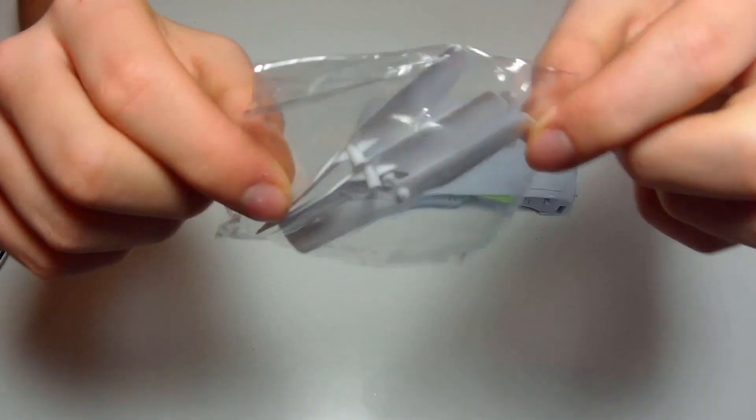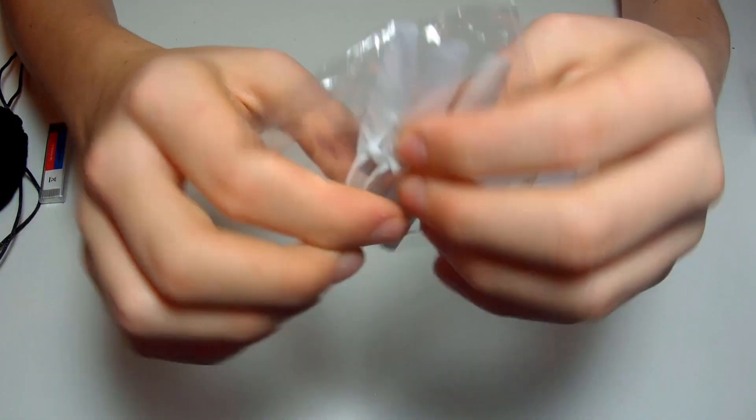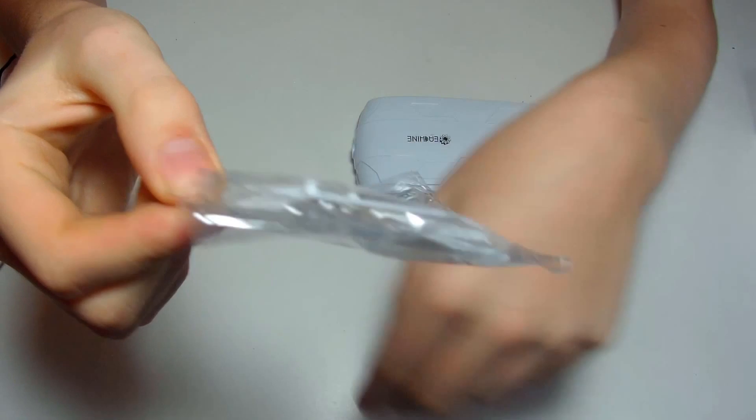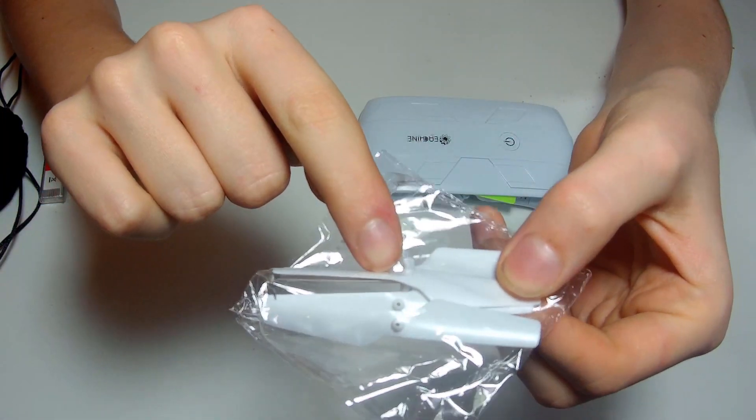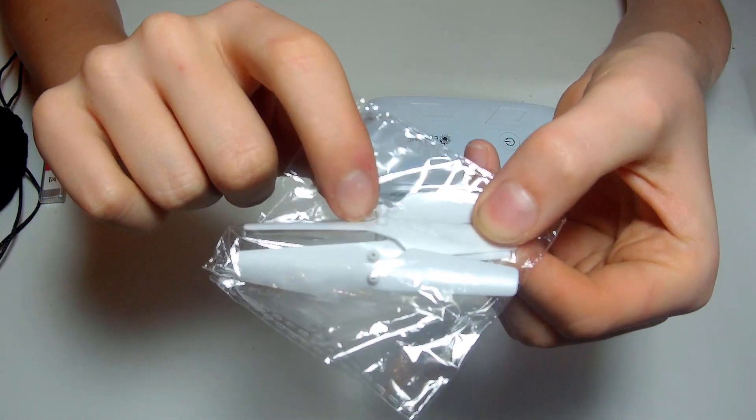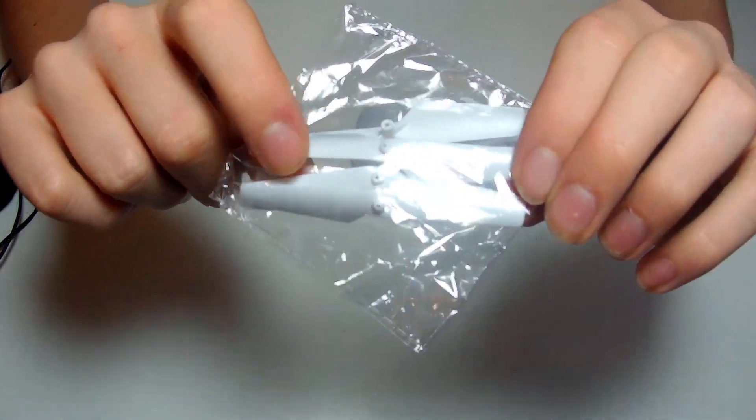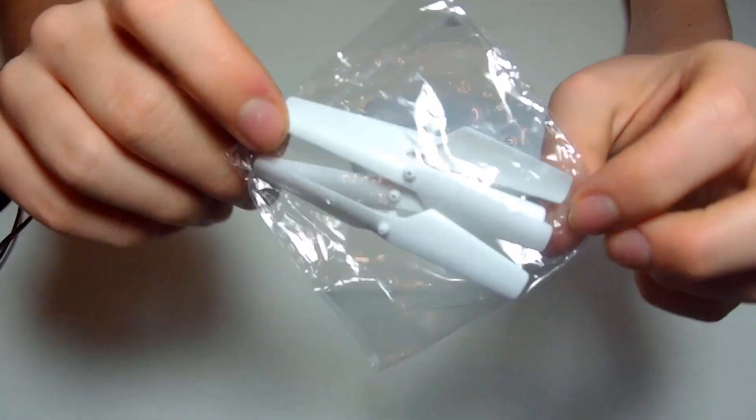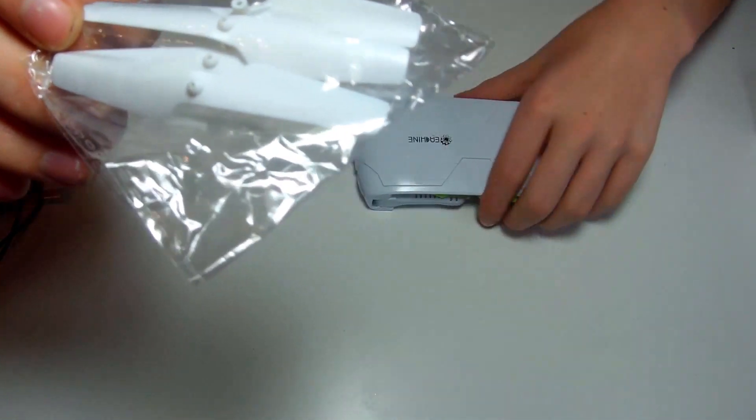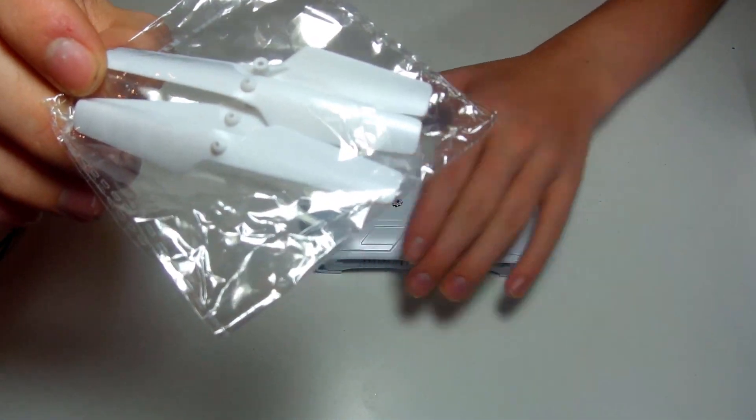You're also going to get the four props that are on the drone itself and then four spare white props. These props have no markings on them, so if you need to put them onto the quad it's kind of hard to tell which one goes where, especially if you're less of an enthusiast, which you probably are because this is a bit of a lower end quad.